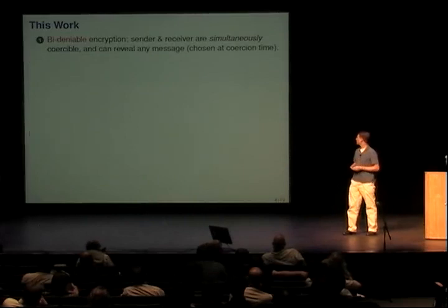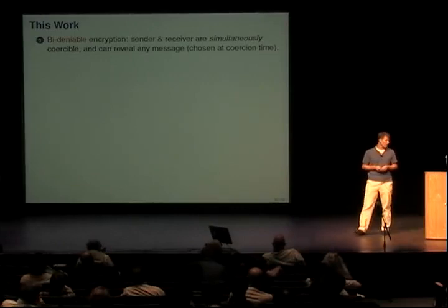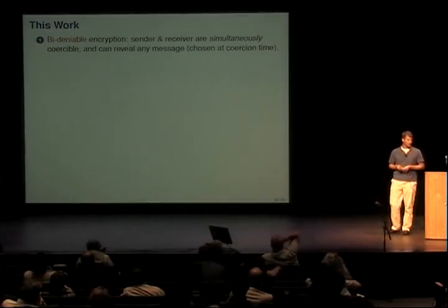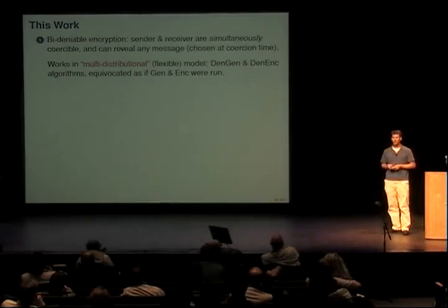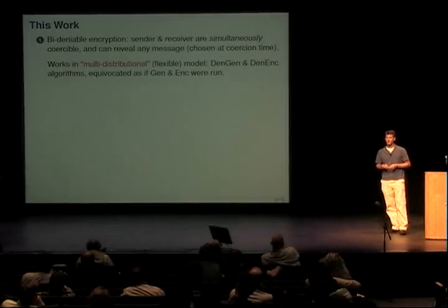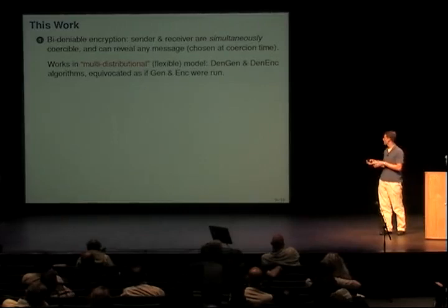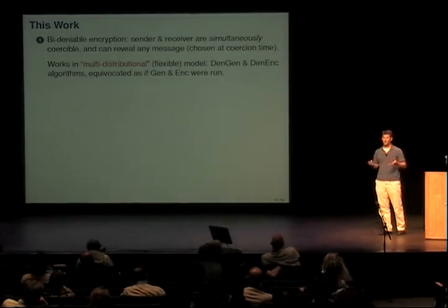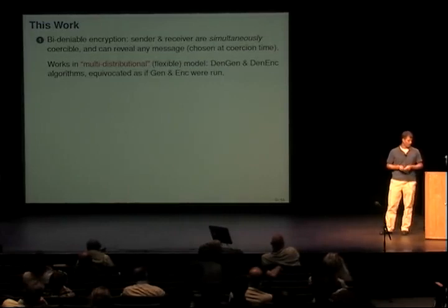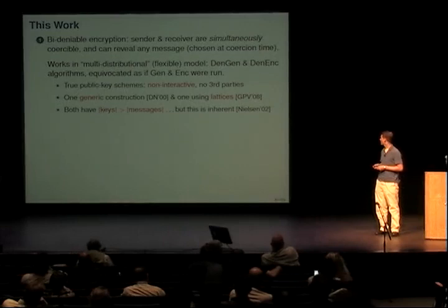In this work, we make progress on these problems. We give bi-deniable encryption schemes, meaning you can simultaneously coerce the sender and the receiver and reveal any message you like, even chosen as late as the time of coercion or in advance. This works in what's called the multi-distributional — or for simplicity, flexible deniability — model. These are true public key schemes; they're non-interactive in contrast to the previous bi-deniable scheme, and there are no third parties. We actually give two very different styles of schemes.